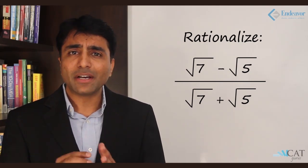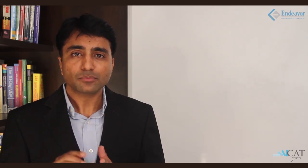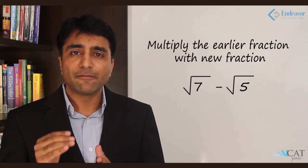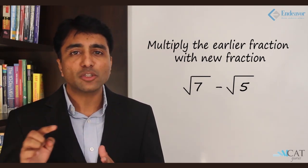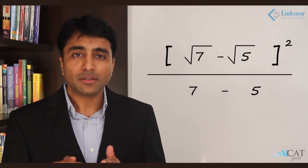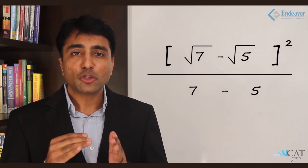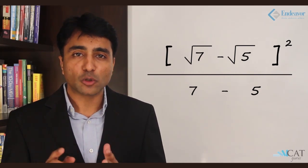Our agenda over here will be to remove square root from denominator. In order to do this, we will multiply numerator and denominator both by square root of 7 minus square root of 5. By doing so, we will get our numerator as square root of 7 minus square root of 5 the whole square upon the denominator as square root of 7 the whole square minus square root of 5 the whole square.